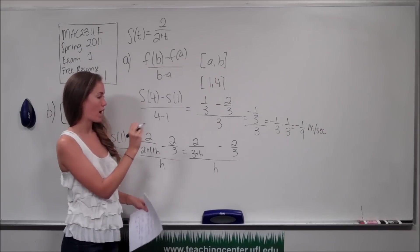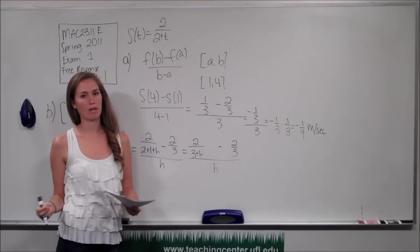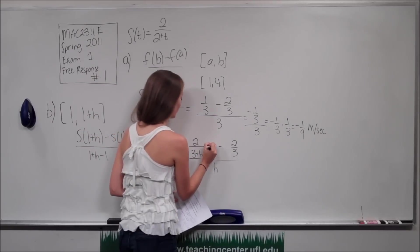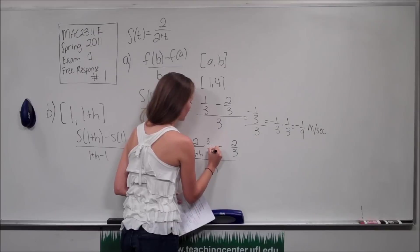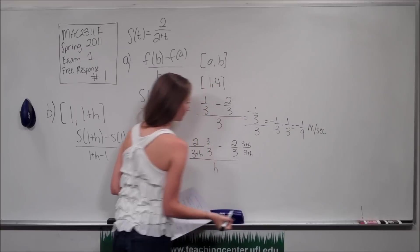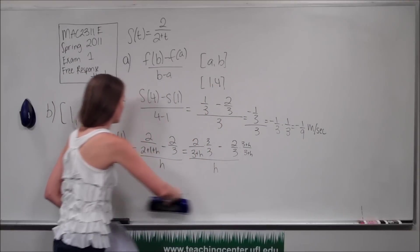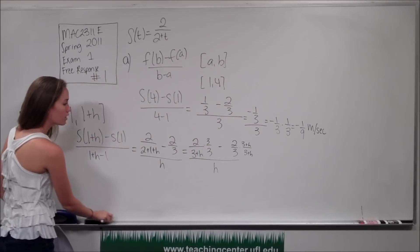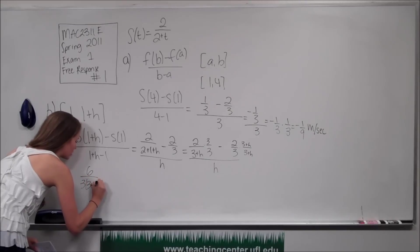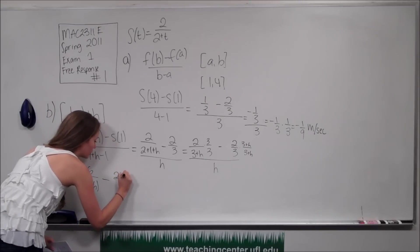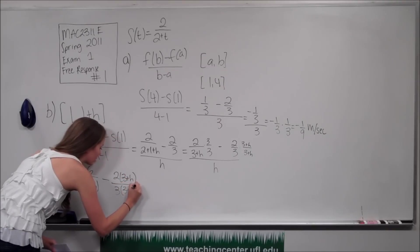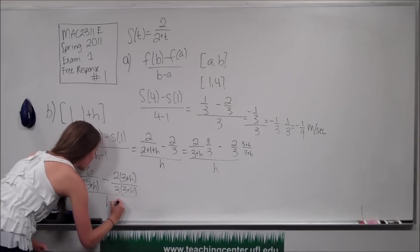We want to add the two terms together in our numerator, so we need a common denominator. Our common denominator is going to be 3 times 3 plus h. We multiply the first term by 3 over 3 and the second term by 3 plus h over 3 plus h. That becomes 2 times 3, so 6 over 3 times 3 plus h, minus 2 times 3 plus h all over 3 times 3 plus h, and that's still all over h.